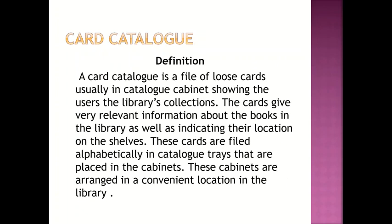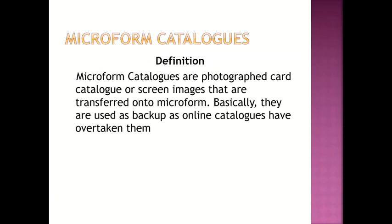Now, let's look at the card catalog. A card catalog is a file of loose cards, usually in catalog cabinets, showing users the library's collections. Card catalogs give very relevant information about the books in the library, as well as indicating their location on the shelves. These cards are filed alphabetically in catalog trays placed in the cabinets, which are arranged in a convenient location in the library. The microform catalog consists of photographed card catalog or screen images transferred onto microform. They are used mainly as backup, as online catalogs have overtaken them.